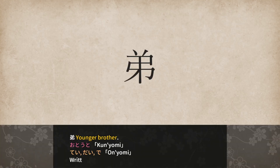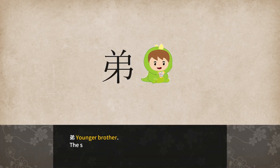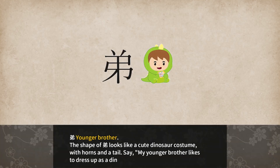Ototo — younger brother. Ototo for Kunyomi and Tei/Dai/Ode for Onyomi. Written with 7 strokes. The shape of Ototo looks like a cute dinosaur costume with horns and a tail. Say: my younger brother likes to dress up as a dinosaur.